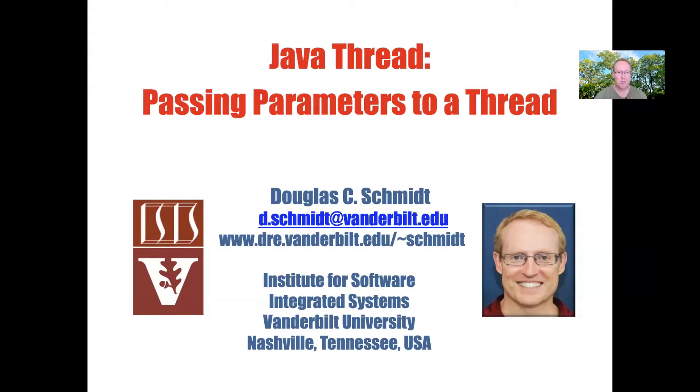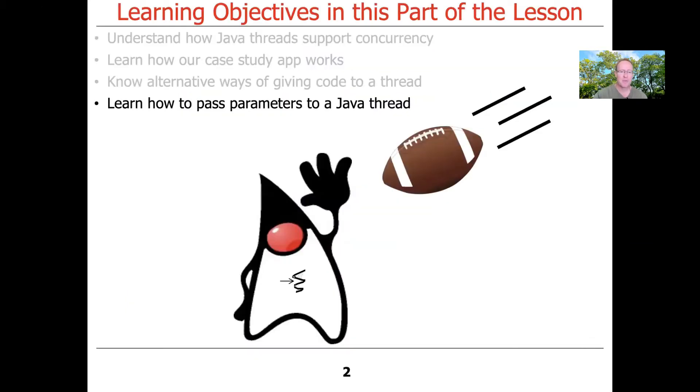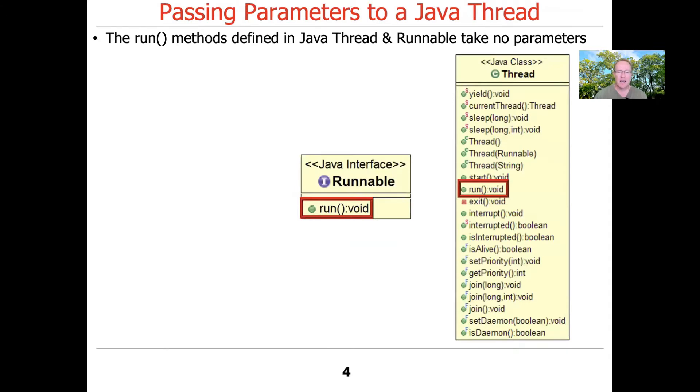Let's talk about different ways you can pass parameters to a thread. We'll see that there's a real important need for this because the run method on both the thread class as well as on the runnable interface takes no parameters.